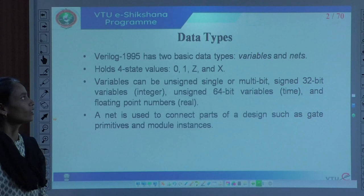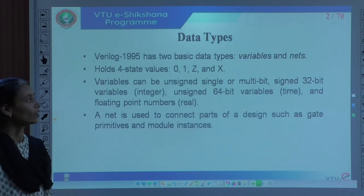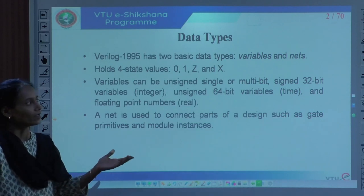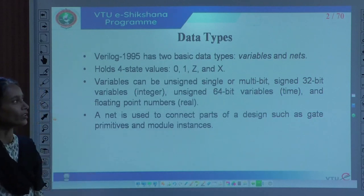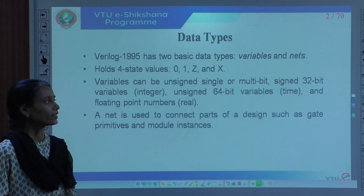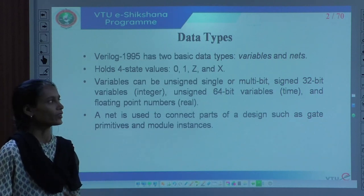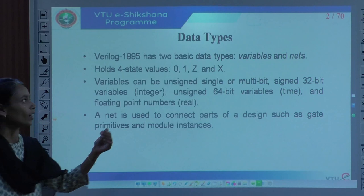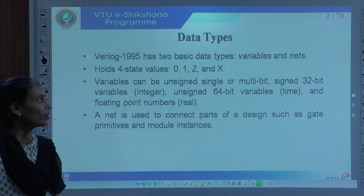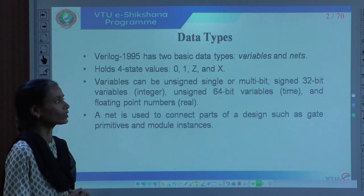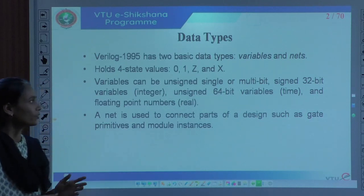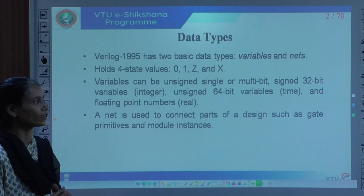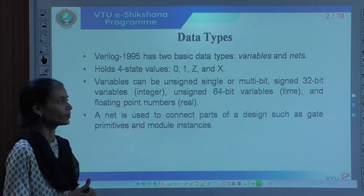Considering Verilog 1995, it was a very old version wherein basically we have two types of data types: variables and nets. Reg and wire are used correspondingly for variables and nets. Most of the time reg is used for storage purpose and wire is used for interconnection purpose. They are called four-state values which can have logic 0, logic 1, high impedance, or the unknown state X. Variables can be unsigned, multi-bit signed 32-bit, integer, real, or time.